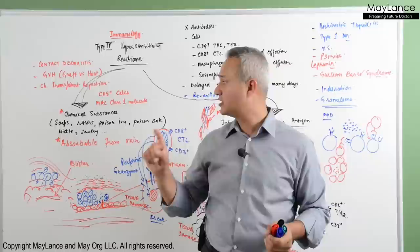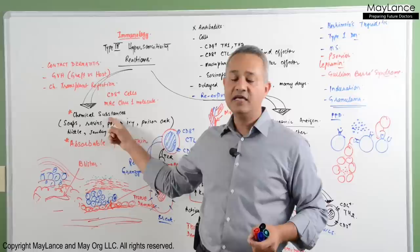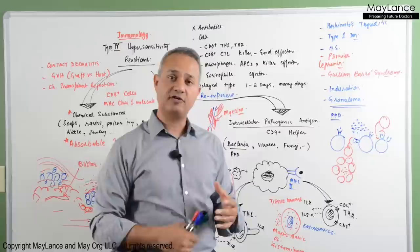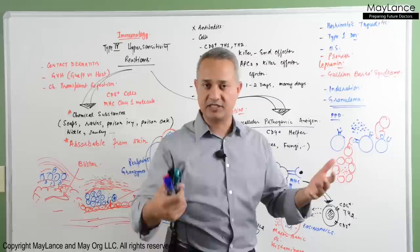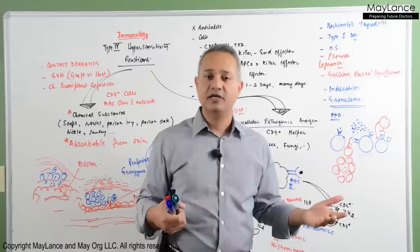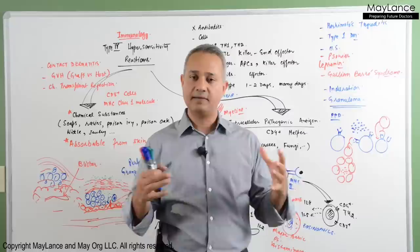To summarize: contact dermatitis is caused by chemical substances, uses MHC class 1, and involves CD8 lymphocytes. PPD type is pathogenic — derived from a bacterium — and involves macrophages and the CD4 macrophage subdivision. This is how to separate the two subtypes of type 4 hypersensitivity. Thank you very much.